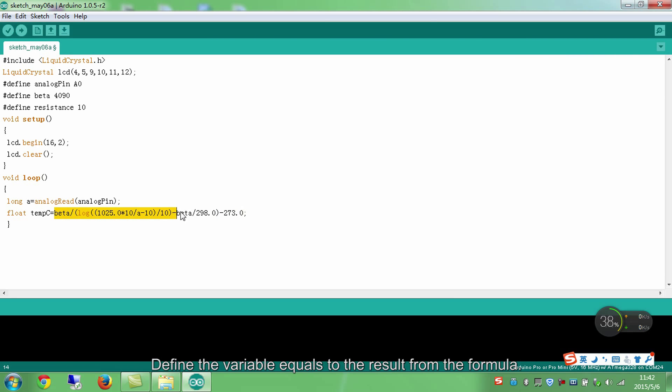Define the variable equals to the result from the formula. Here the data sheet float is a type for floating point numbers, a number that has a decimal point. Floating point numbers are often used to approximate analog and continuous values because they have greater resolution than integers. Floating point numbers can be as large as about 3.4 plus 38 and as low as negative 3.4 plus 38 also. They are stored as 32 bits, 4 bytes of information. The formula here is to calculate the temperature in Celsius which we deduced previously.